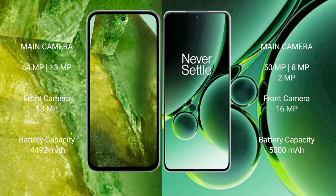Google Pixel 8a features a rear dual camera setup of 64MP plus 13MP, and a front camera of 13MP. OnePlus Nord 3 features a rear dual camera setup of 15MP plus 8MP plus 2MP, and a front camera of 16MP.